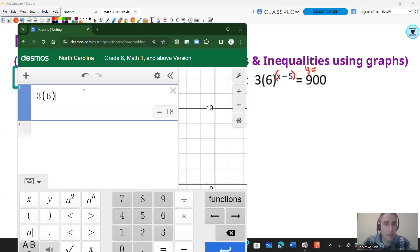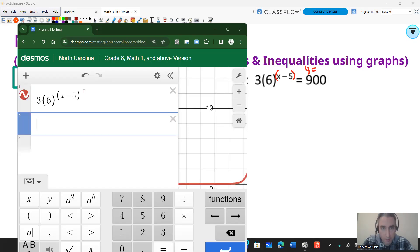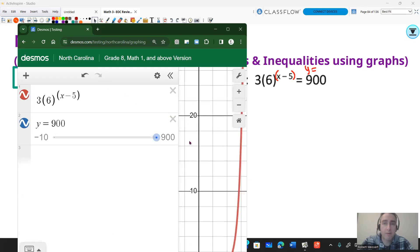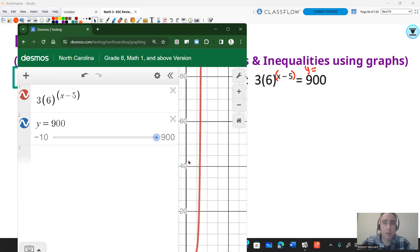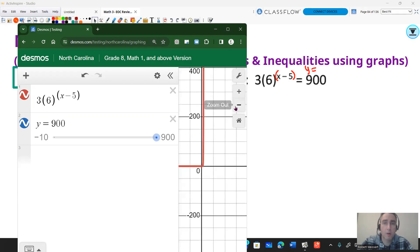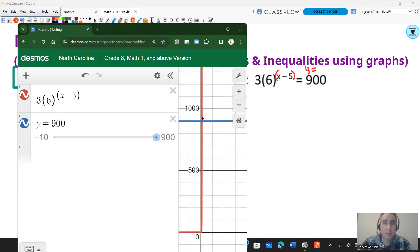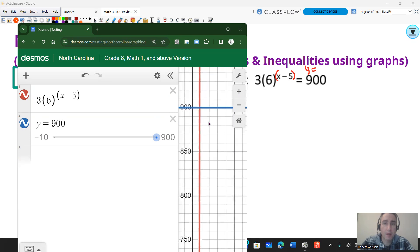All right, 3 times 6 raised to the, and then you can do parentheses x - 5. Go to the next line, because it's the other side of the equation, and write y equals 900. 900 is very far up, so you're going to need to zoom out or just keep going until you see where they cross. Maybe go back in a little bit, and your answer will be 8.183 to three decimal places. And in Desmos, it usually only goes to three decimal places when you do a graph intersection anyway. So the answer is 8.183.